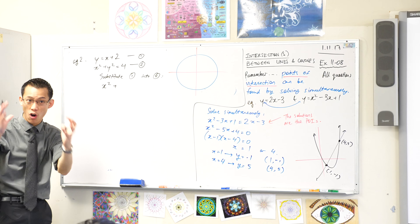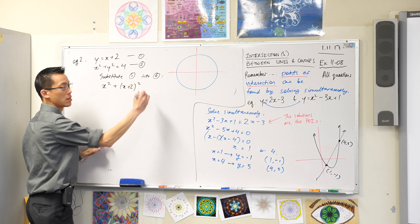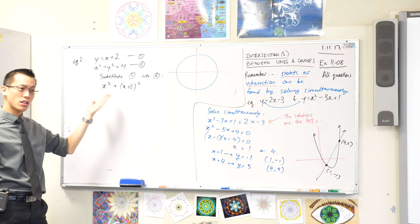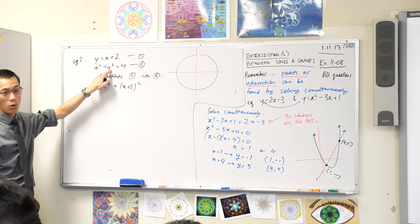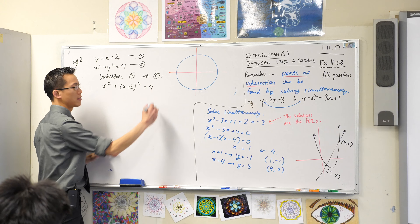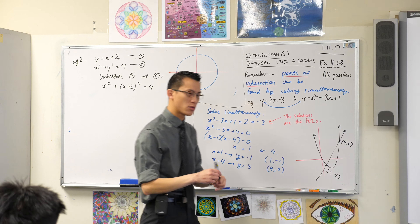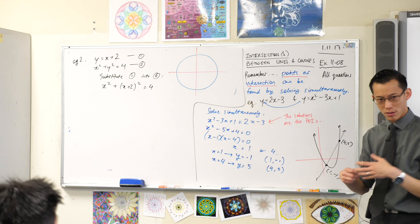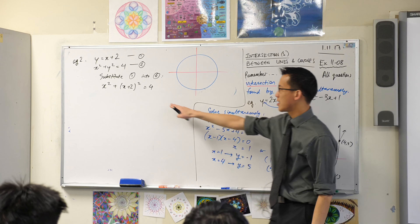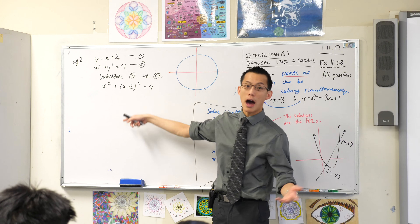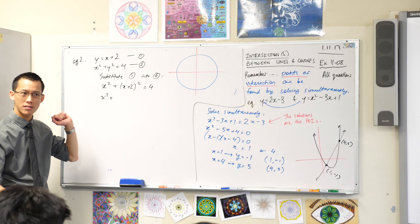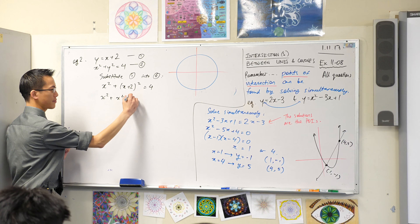Because I'm substituting equation one into equation two, what that means is everywhere I saw a y in equation two, I'm not going to write y. I'm going to write x plus two, because y and x plus two are supposed to be interchangeable. That's what that means. So my first line of working will look like this: there's an x squared, and then instead of writing y squared, I'm going to write x plus two — x plus two, squared. I have to put the whole thing and square the whole thing.